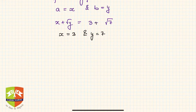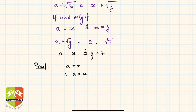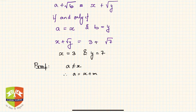Let us now try to prove it. Our assertion is a equals x and b equals y. Let us assume a is not equal to x. Then we can definitely say that a is equal to x plus m.